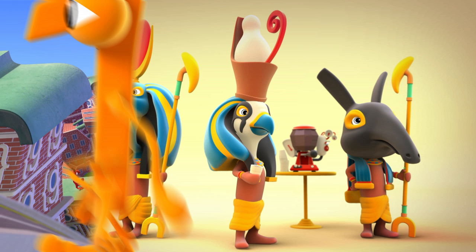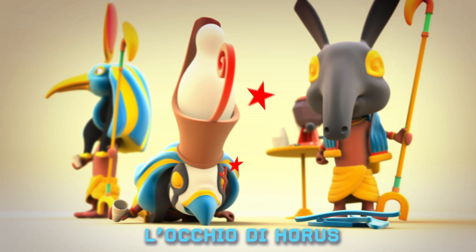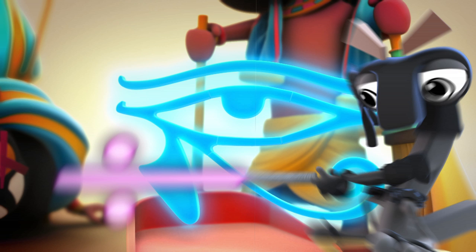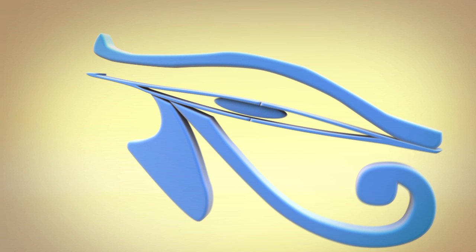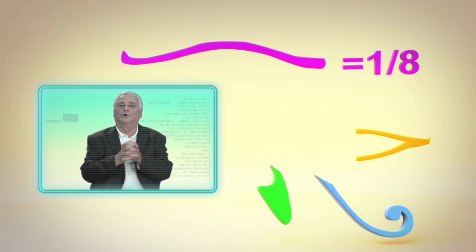Certo, Horus era il dio del cielo e aveva le sembianze di un falco. Secondo la leggenda, un giorno il dio Sete, che era molto dispettoso, gli strappò l'occhio sinistro e lo ridusse a pezzettini. Ma Totti, il dio della luna, riuscì a recuperarlo e a ricomporlo. Per gli antichi egizi l'occhio di Horus era così, e quella forma non è casuale. Se tu vai a osservare i vari simboli che formano la figura dell'occhio di Horus, ti accorgerai che ciascuno di essi è la scrittura geroglifica di una frazione. E le frazioni sono un mezzo, un quarto, un ottavo, un sedicesimo e così via.